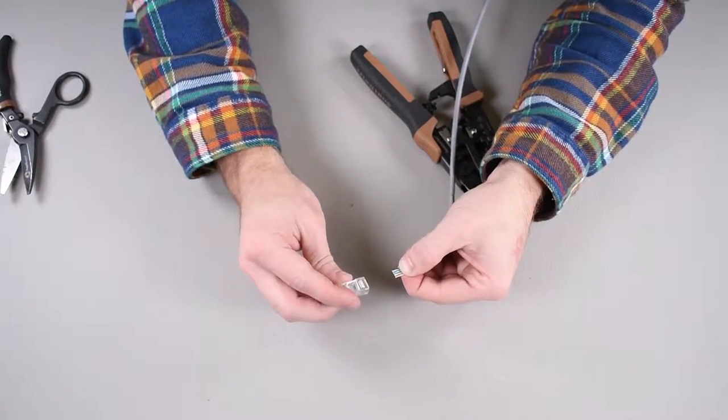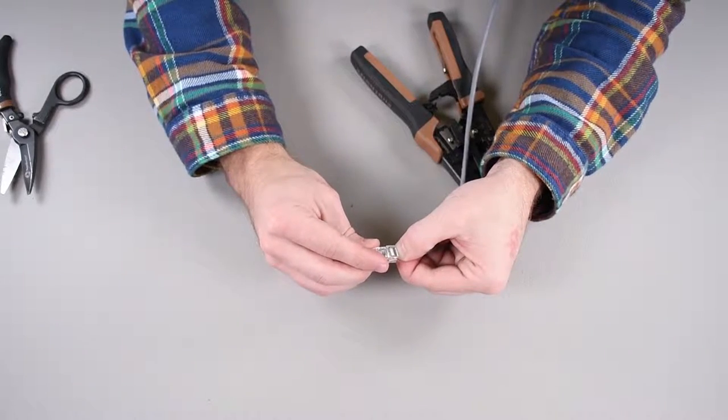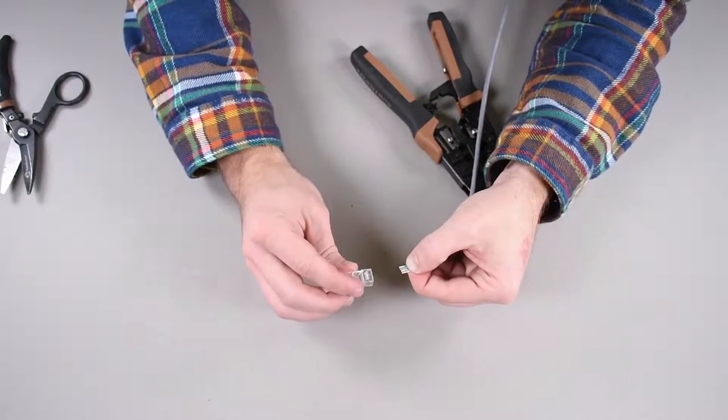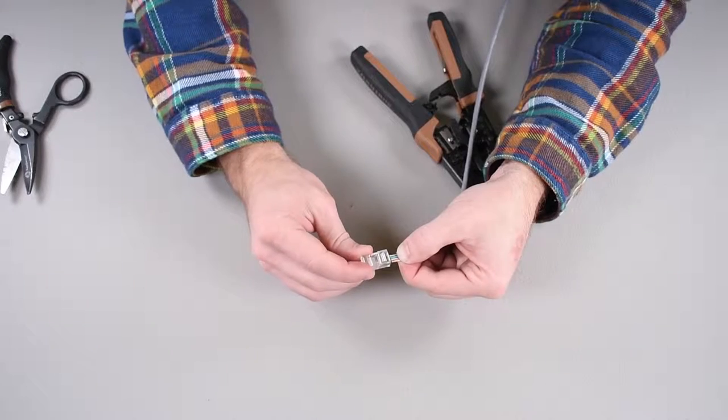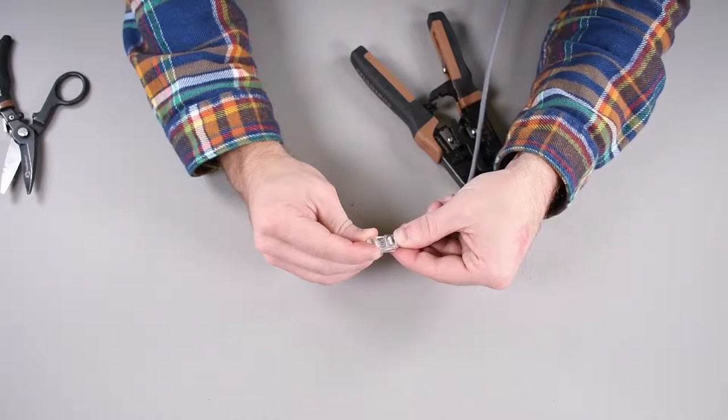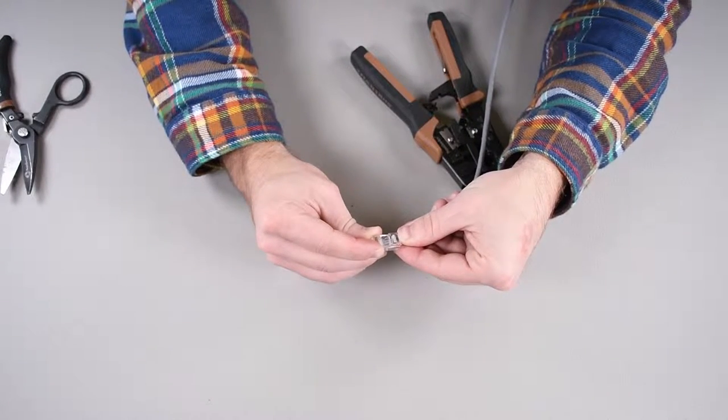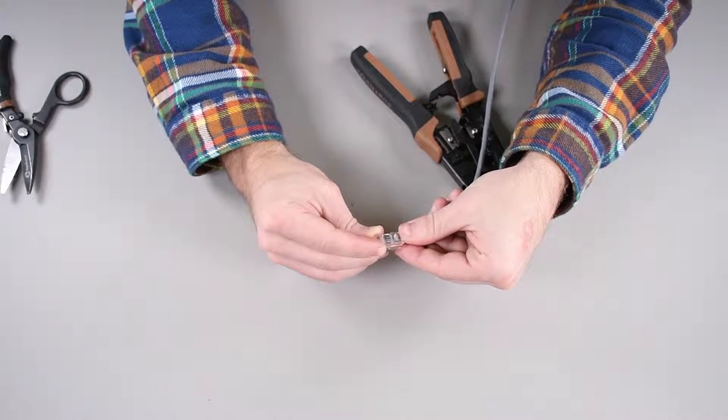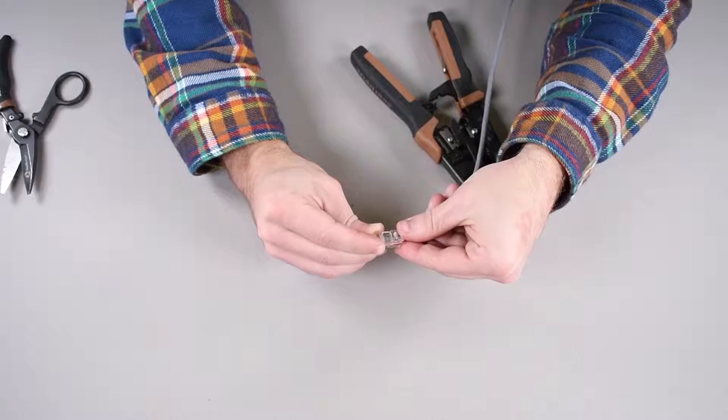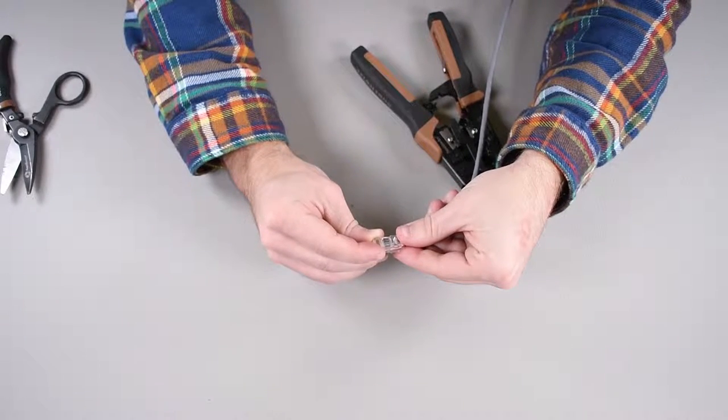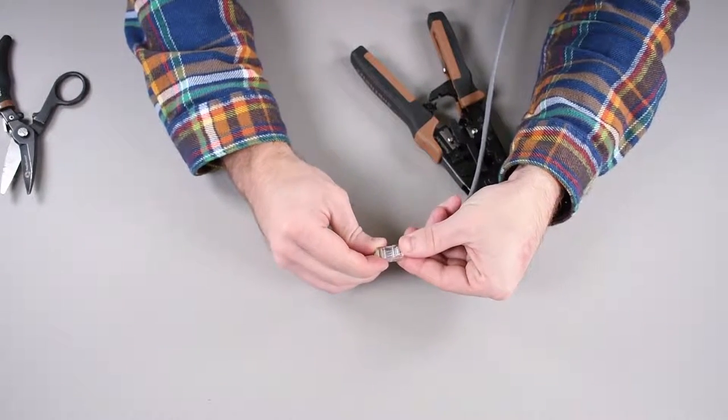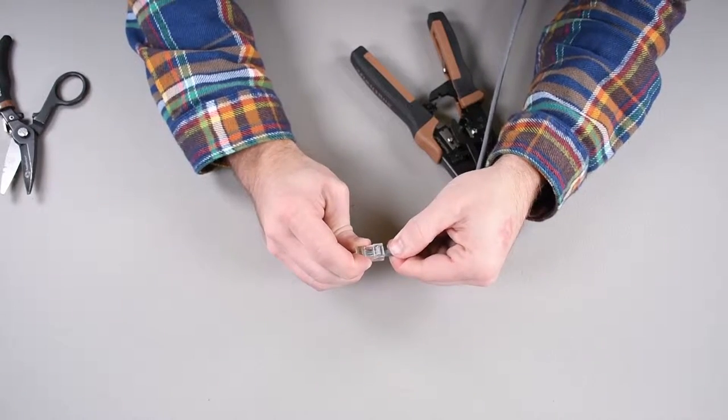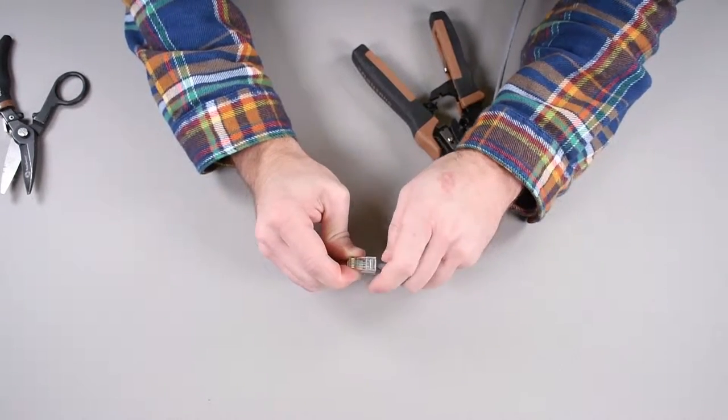So clip down with the orange away from me. You can do it either way. I just, this is the way I do it and I do it the same way every single time so that I know I'm doing it the same. And then insert the cables. So I got all the little wires in each channel. I'm double checking my order. Orange white, orange, green white, blue, blue white, green, brown white, brown.